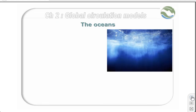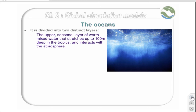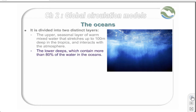The oceans are divided into two distinct layers. The upper layer, known as the seasonal layer, comprises primarily warm, mixed water, and stretches up to 100 metres deep in the tropics. This is the layer that interacts with the atmosphere. The second layer is separated from it by an inversion layer, and the deeps contain more than 80% of the water in the oceans.